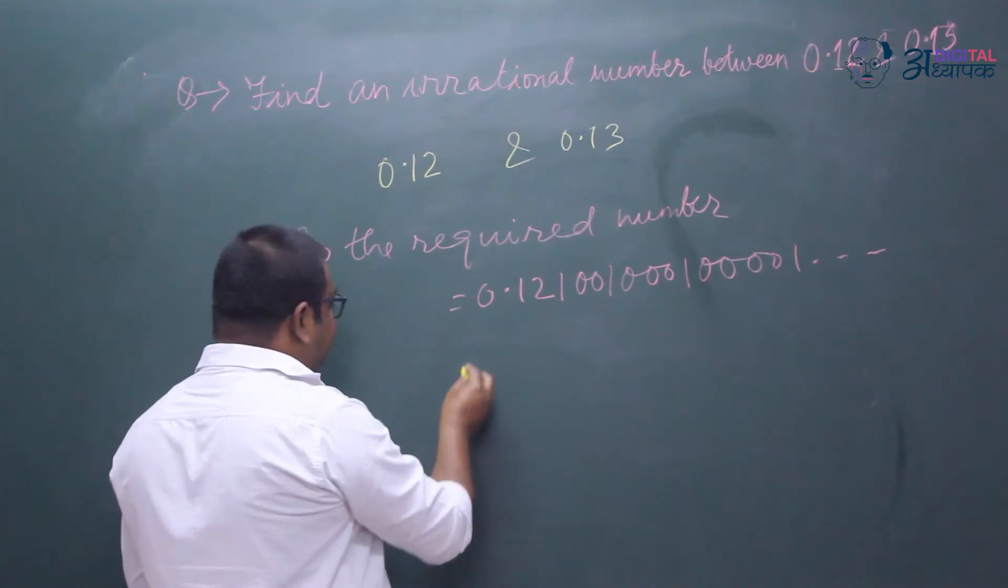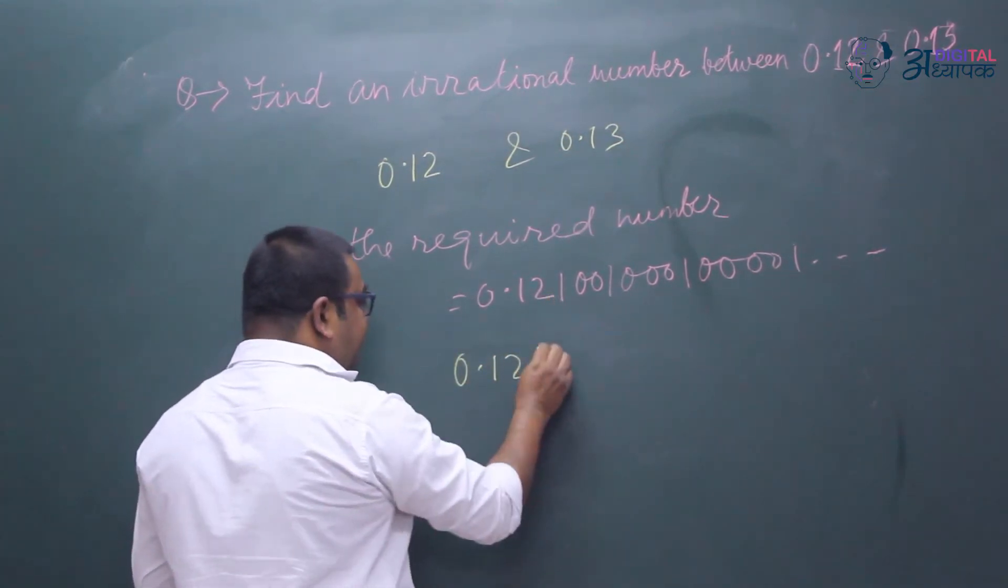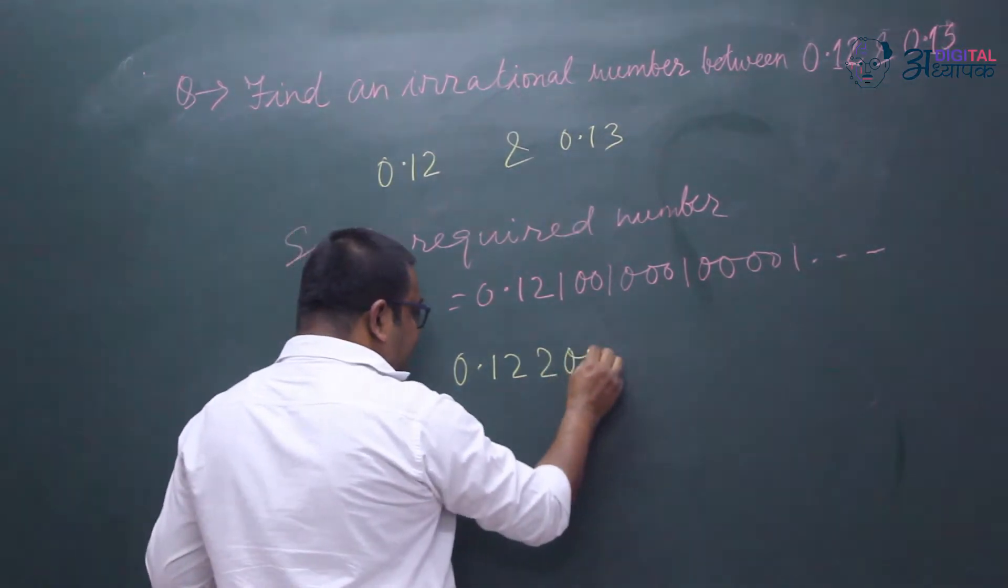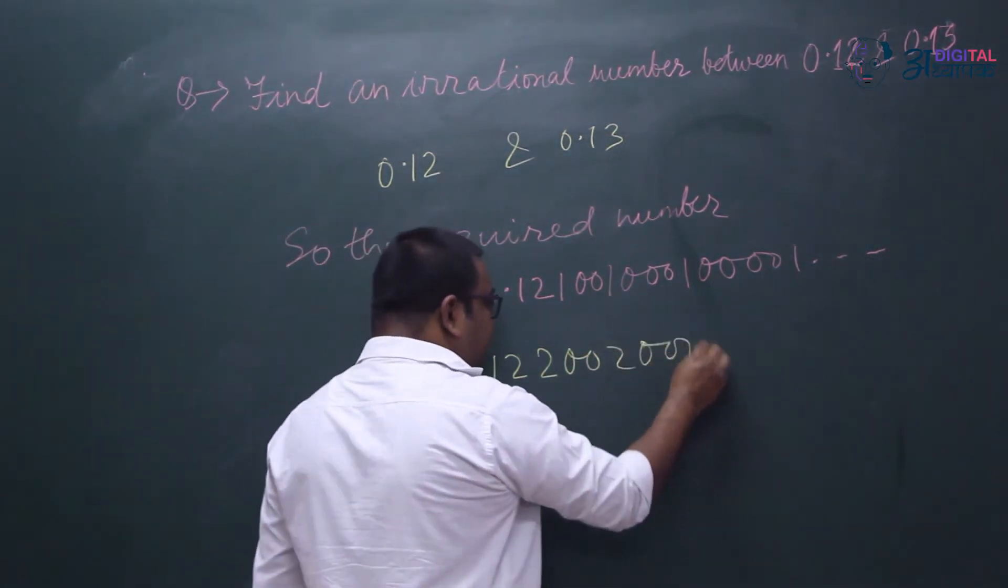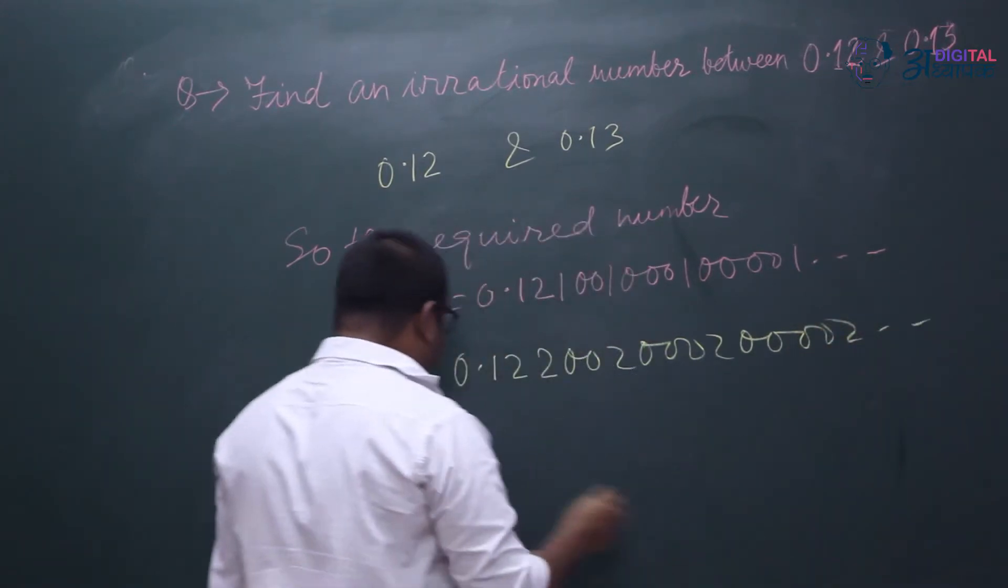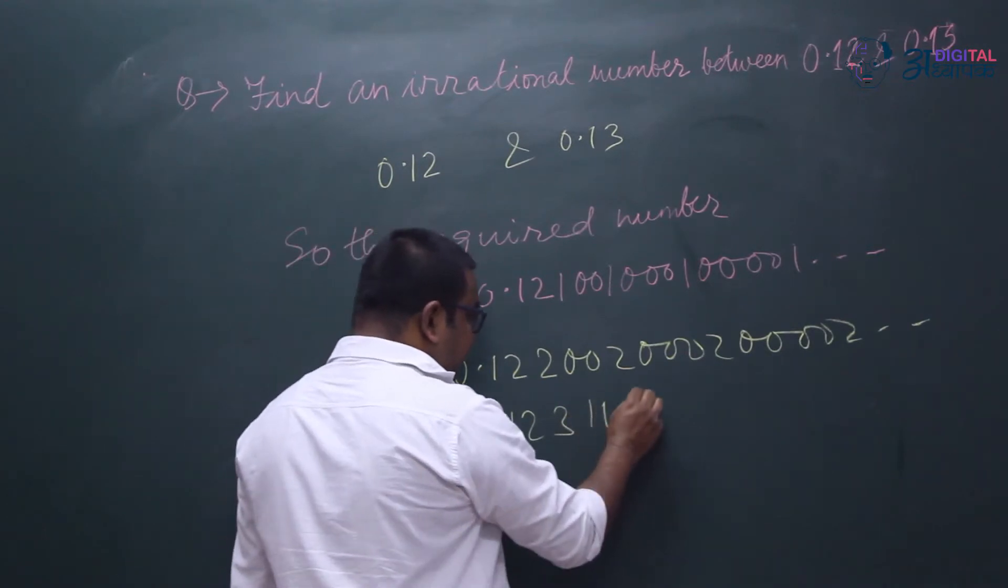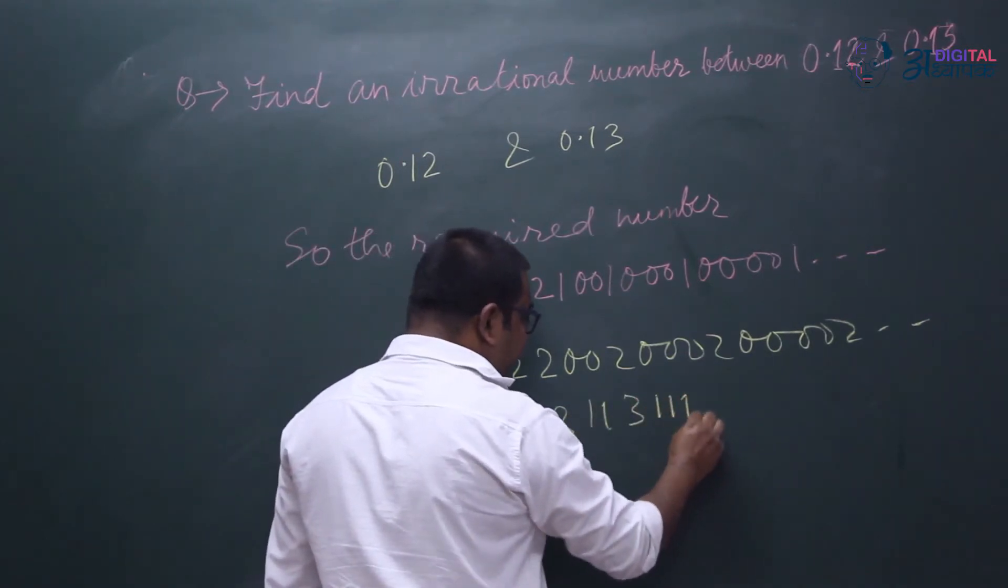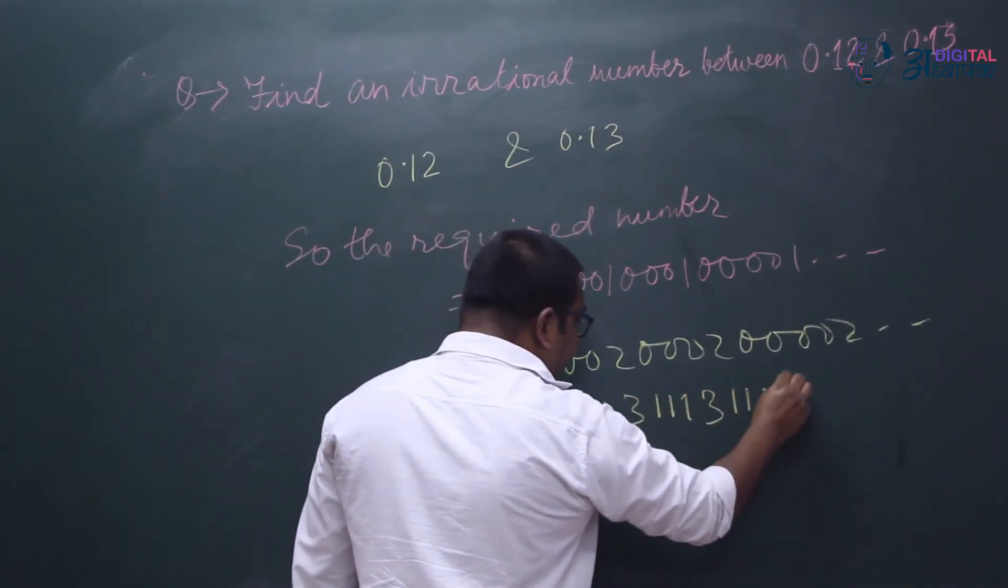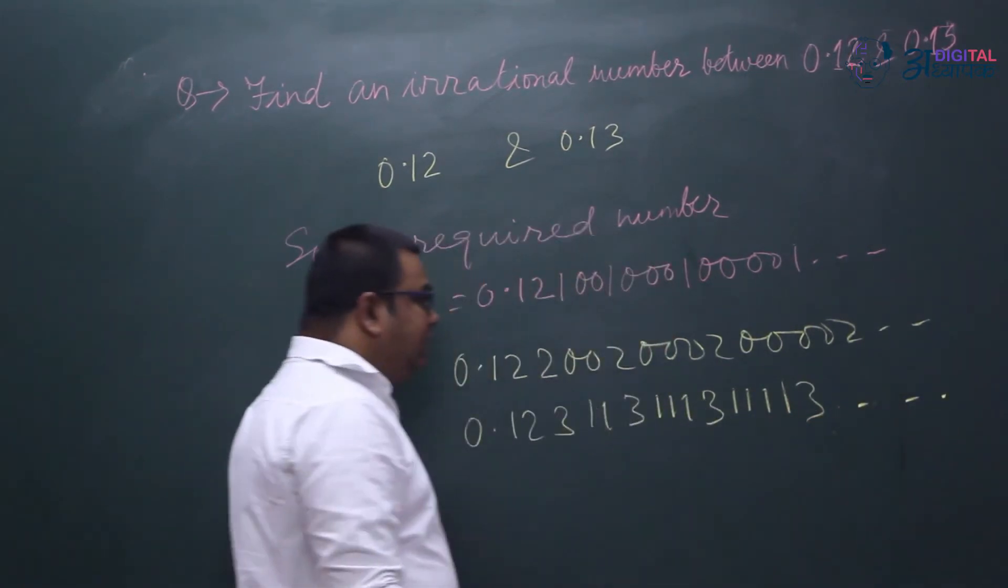Similarly, you could have taken 0.12 with two, double zero two, triple zero two, four zero two, and so on. Or 0.123 with double one three, triple one three, four ones three. Any numbers you can take, and the only thing is...